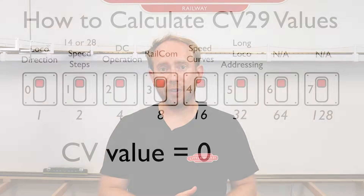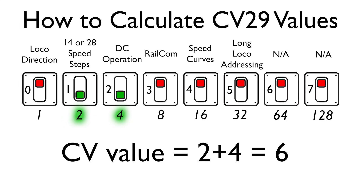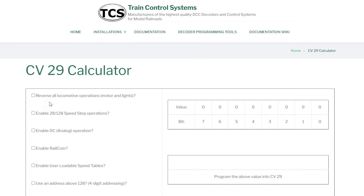So if everything was off, CV29 would be zero. If we want to turn on 28 speed steps and DC operation, we'd add 2 and 4, which gives us a total of 6 — and this is generally the default value for CV29 on a decoder. Obviously calculating these numbers isn't very straightforward, so there are a number of online calculators available that will work out the value required for CV29 for you. Here's one from Train Control Systems.